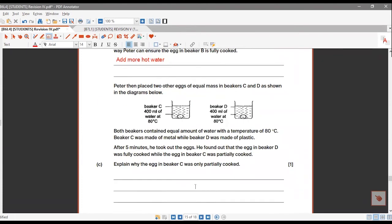Then now, we move on to part C. Peter then placed two other eggs of equal mass in Beaker C and D, as shown in the diagram below. So now you notice that Beaker C got 400 milliliters of water, Beaker D also got 400 milliliters of water, and both are 80.